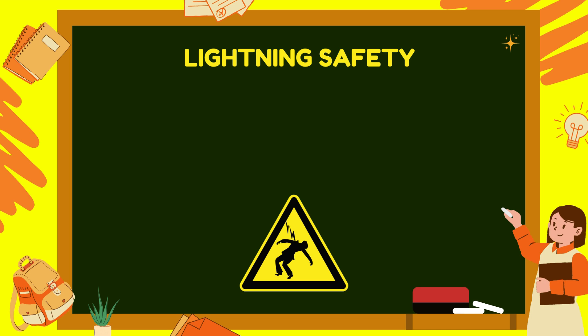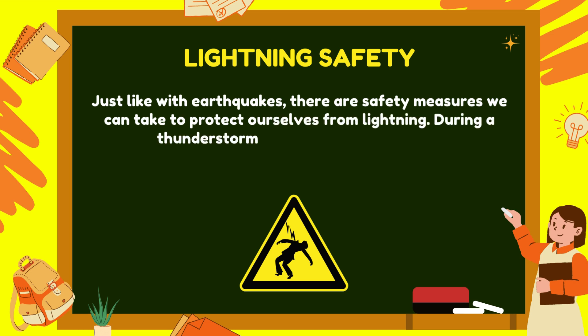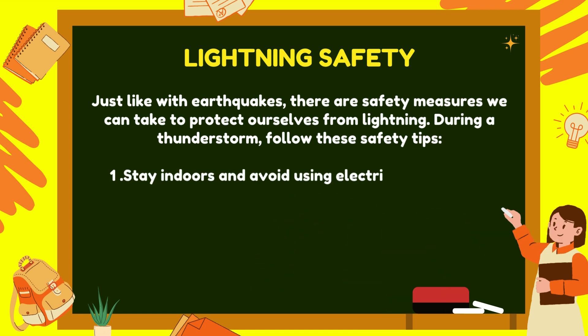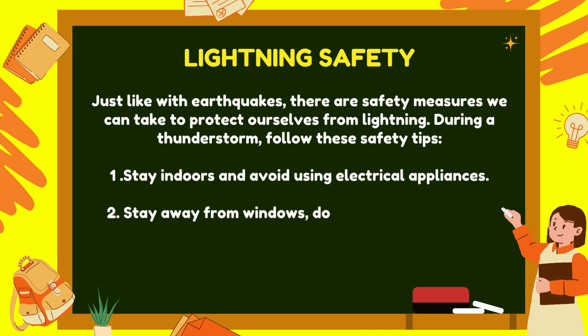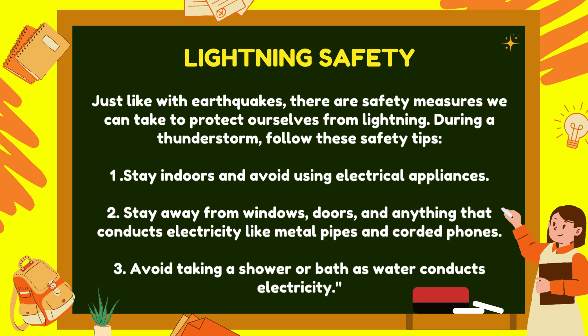Lightning safety: Just like with earthquakes, there are safety measures we can take to protect ourselves from lightning. During a thunderstorm, follow these safety tips: Stay indoors and avoid using electrical appliances. Stay away from windows, doors, and anything that conducts electricity like metal pipes and corded phones.